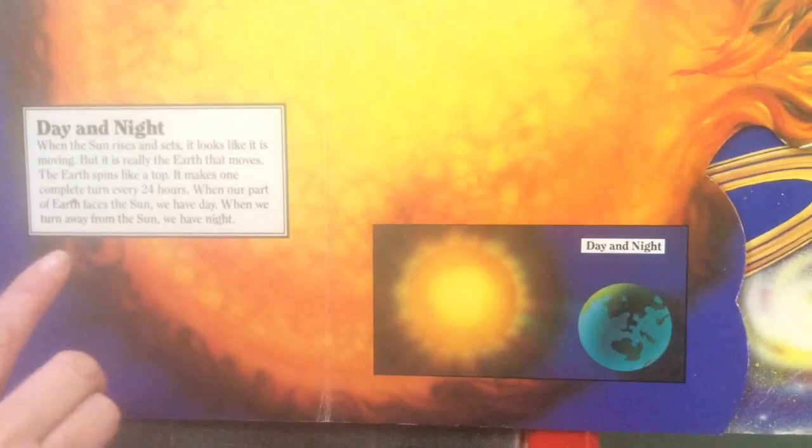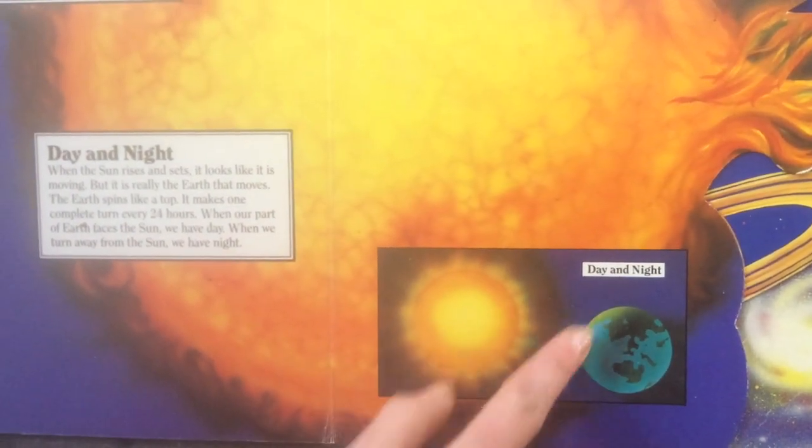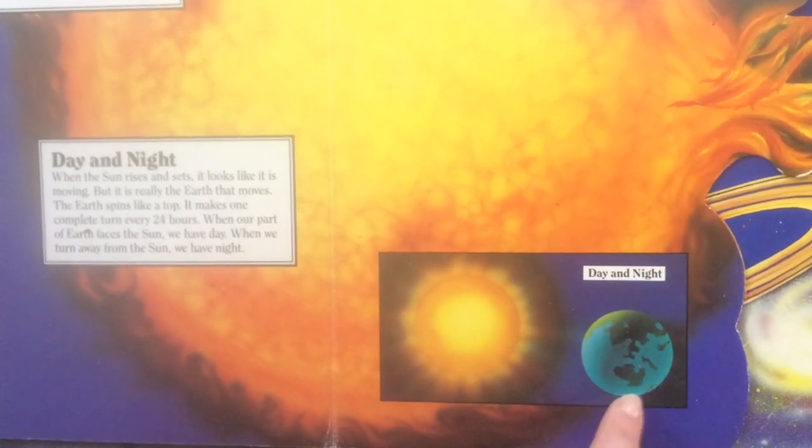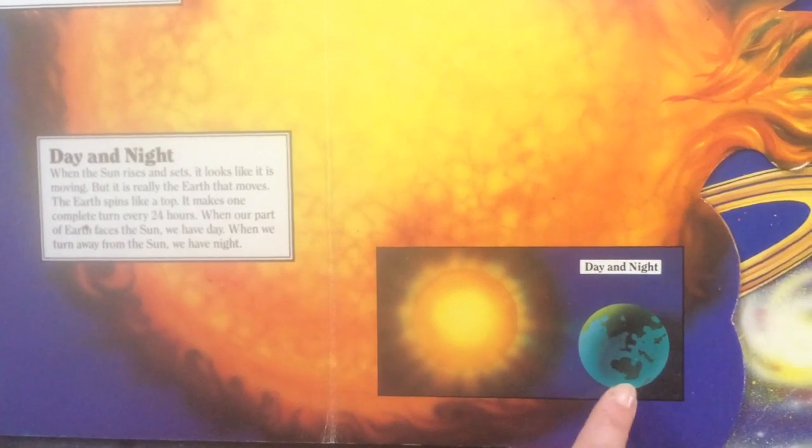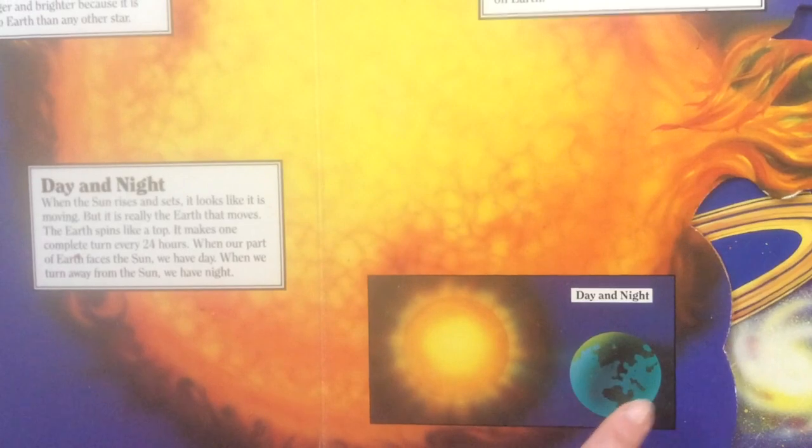And when our part of the earth faces the sun, then we've got day. This side is facing the sun. It's got day. And this side at the back has got night because the sun isn't getting there. So that's night on that side.